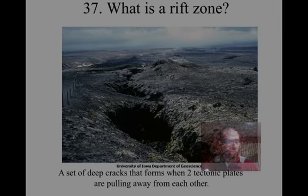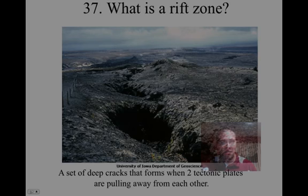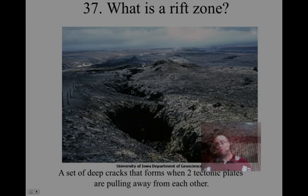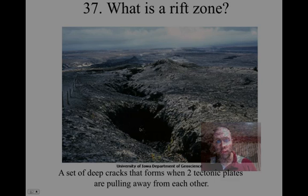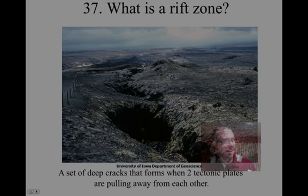We also have rift zones — a set of deep cracks that form when two tectonic plates are pulling away from each other. This is really the beginning of a divergent boundary. These plates are pulling away, and this happens on land first. This rift zone will eventually become so wide that it fills with water and ultimately becomes an ocean over hundreds of thousands or millions of years. That is the end of the notes to get us started in this new unit, E3.3.